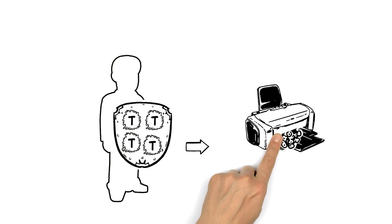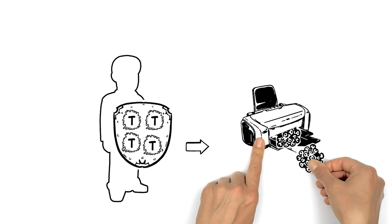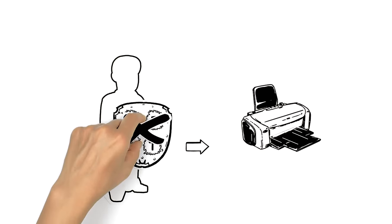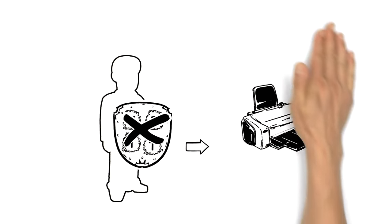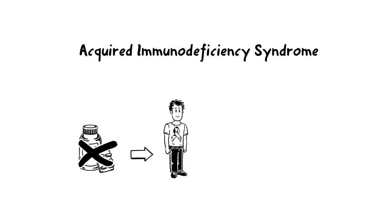It turns them into copy machines to make more copies of itself, then eventually kills the infected T-cells. Without treatment, it takes eight years on average for a person with HIV to develop AIDS, or acquired immunodeficiency syndrome.